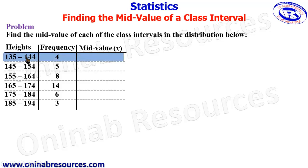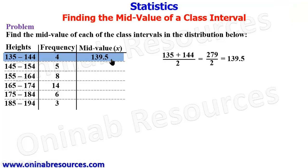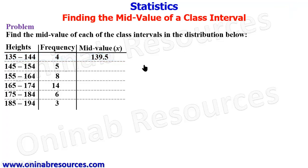Starting from the first class interval, we have 135 to 144. To find the mid value, we add the lower class interval to the upper class interval and divide by 2. 135 plus 144 gives 279, and dividing by 2 we have 139.5 as the mid value for the first class interval.